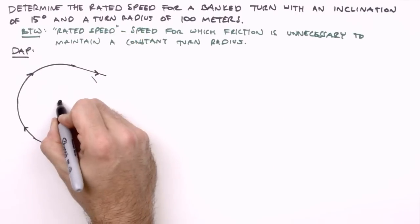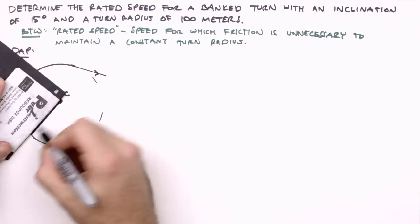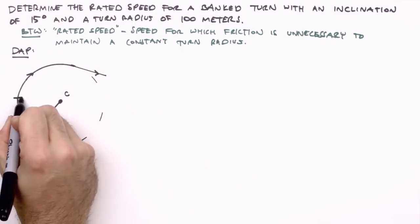Here we'll mark the center of the turn, C, and label the radius of the turn, R. Finally, we'll draw our vehicle in mid-turn.